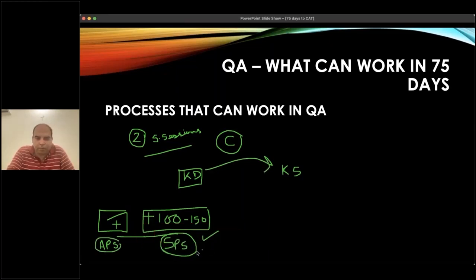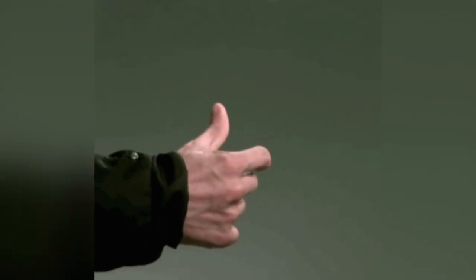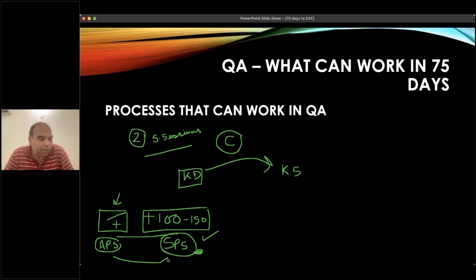If you don't have a problem in a chapter, look at a few more questions and a few more solutions from books, so that you learn how to do those questions. It's just a toss-up between these two approaches. In the last 75 days, if you don't have a problem in any chapter, you should go through it and look at the basic formulas. The basics of the chapter should be covered, but apart from that, nothing more is needed. The focus is between KPS and SPS.